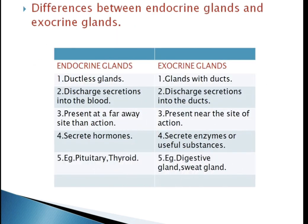Let's see the differences between exocrine glands and endocrine glands. Endocrine glands are ductless glands. They secrete their products, that is hormones, into the extracellular space around the cells. The secretions then pass into capillaries to be transported in the blood. Examples include the pituitary and thyroid.